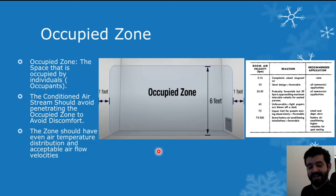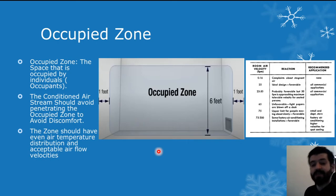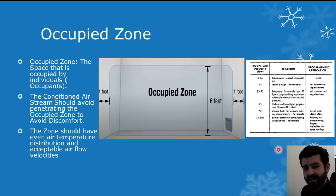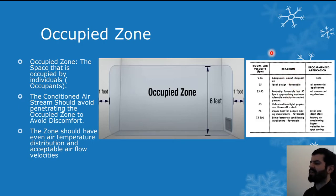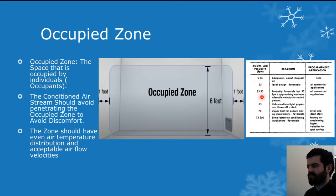There have been different applications documented in the industry per standards such as ASHRAE, along with successful installations where occupants were surveyed about their comfort levels. On the right side, we have a table showing different air velocities present within multiple spaces, the occupants' reactions, and the recommended application based on each velocity range. The first column shows room air velocity in feet per minute, with ranges: 0–16, 25–50, 65, 75, and 75–300 FPM.